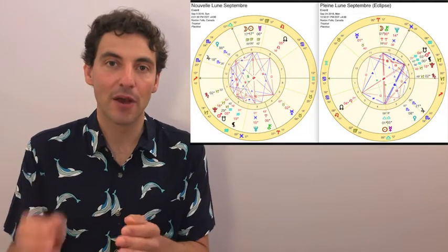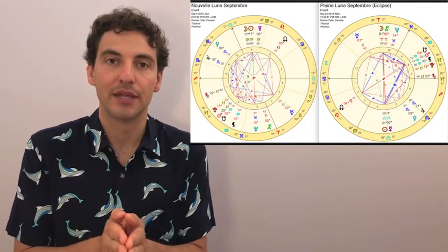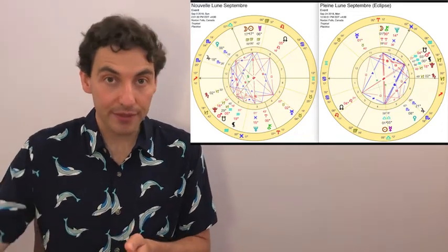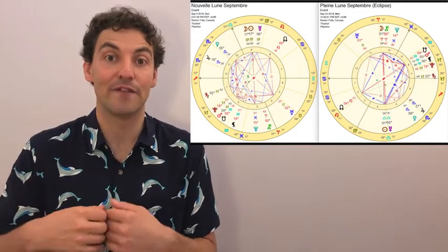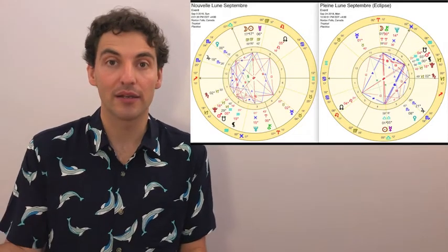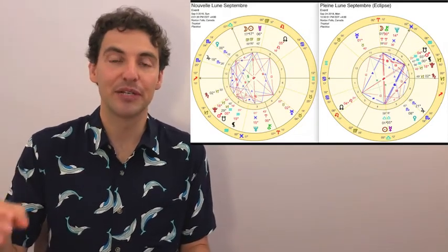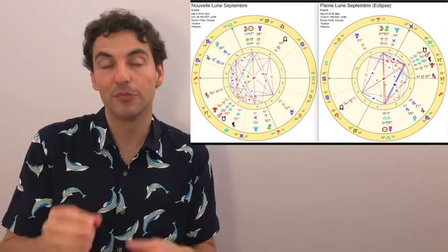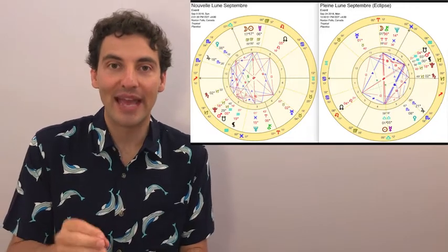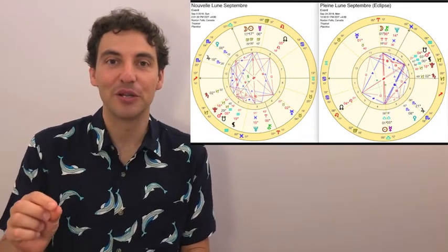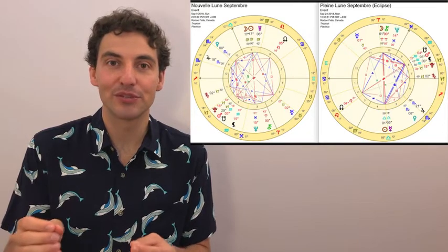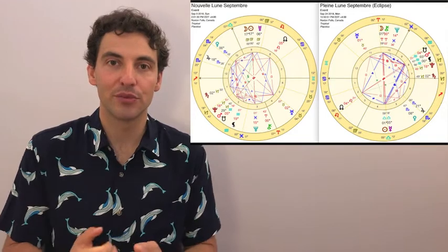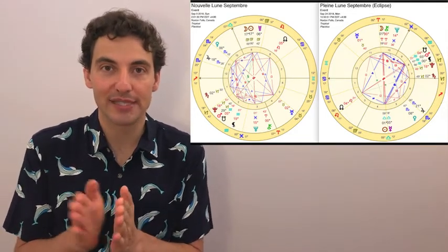You remember how Saturn is accompanying the full moon since about six months. Well, September is the last of those months and it's very strong. It's going to be in square. So Saturn will be in Capricorn forming a square with the moon in Aries and with the sun, which will be in conjunction with Mercury in Libra. So it will be a very strong tension, but it will be a very beneficial tension because it will bring our awareness to that connection with Saturn.